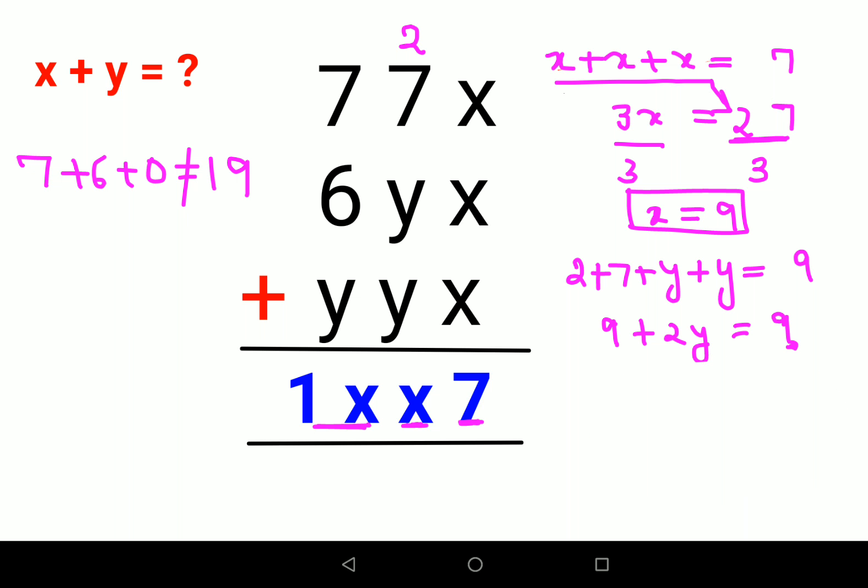From here, we'll try putting the total value of 2 plus 7 plus y plus y as 19 instead of just 9. Subtracting both sides by 9, you will have 2y equals 10, so y comes out to be 5.